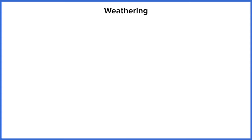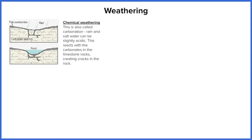Weathering can be split into three different sections. First, chemical weathering — that's when the slightly acidic nature of water, rain, and seawater reacts with the carbonates in certain rock types like limestone. The rock ends up dissolving, or cracks become bigger, until the rock structure becomes so weak that it collapses or large pools start to form.